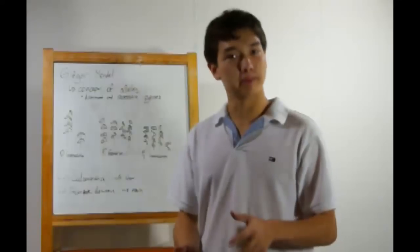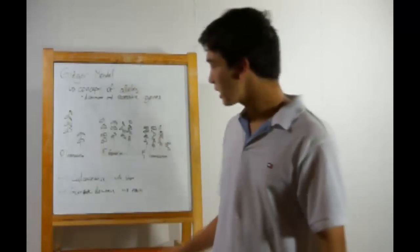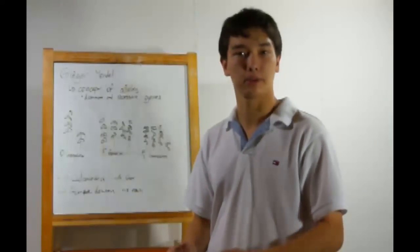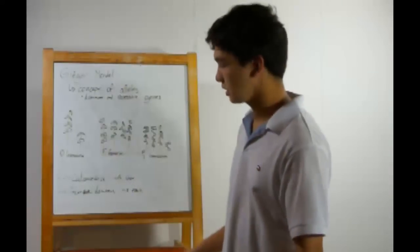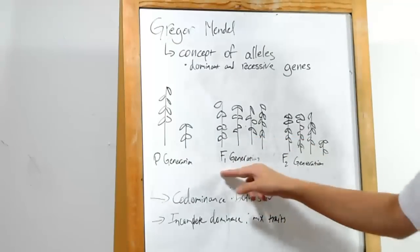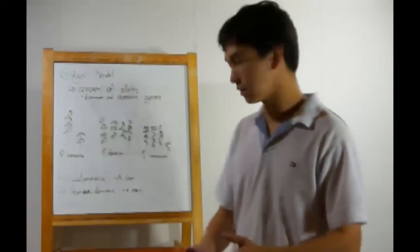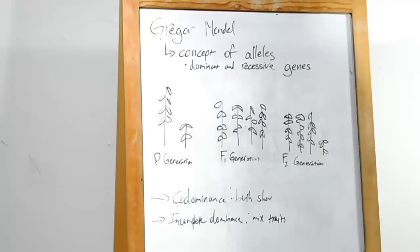Mendel was working with pea plants in the Abbey when he noticed some pretty weird things. Starting out with a tall plant and a short plant — the parent generation — he crossed them and produced offspring. All his offspring were tall. This is the F1 generation. He crossed two of his offspring again and produced the F2 generation. But in this one, three out of every four plants was tall, but the fourth one was short.